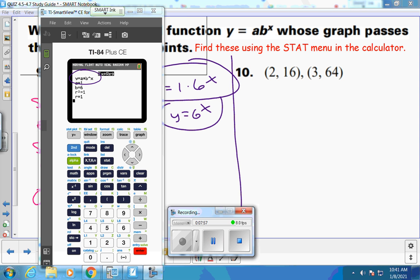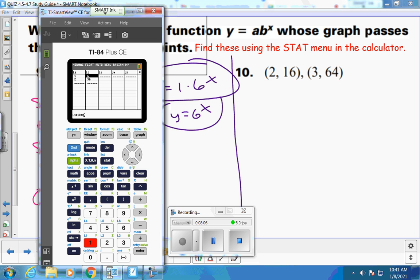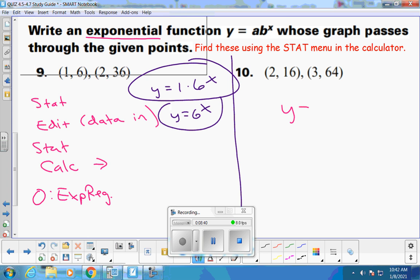Alright, we're on number 10. Same exact deal. We're going to do stat, edit, and put our data in. Stat, edit. I have a 2 and a 3 for my L1s this time. And I have a 16 and a 64 for my L2s. And now I go stat, calculate, 0. So did you guys get A equals 1 and B equals 4? So here's my formula. 1 times 4 to the x. And if you don't want the 1 there, you can just go with 4 to the x.